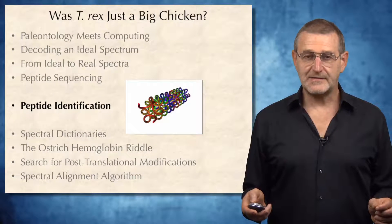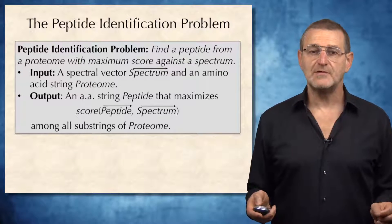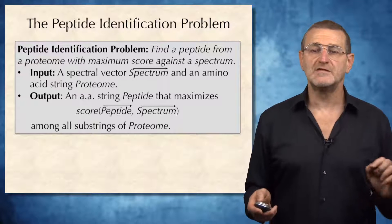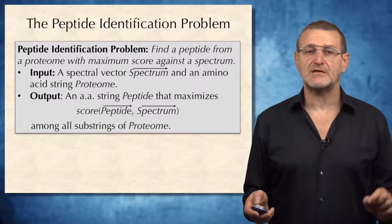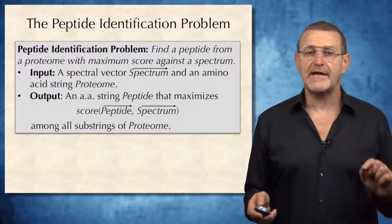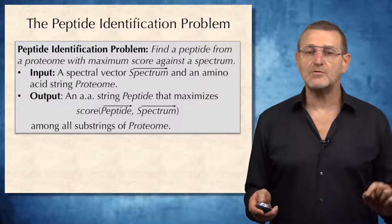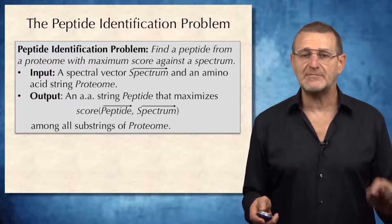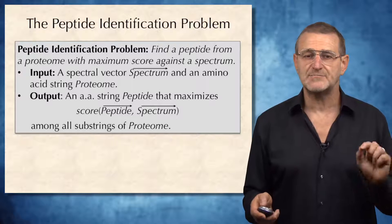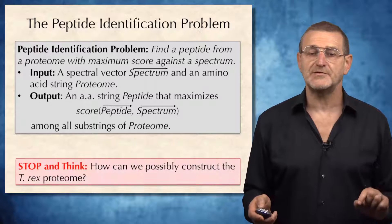We are now ready to solve the peptide identification problem, which is: find a peptide from a proteome with maximum score against a spectrum. The input to the problem is a spectral vector and an amino acid string proteome, and the output is an amino acid string peptide that maximizes the score between peptide and spectral vector among all substrings of the proteome.